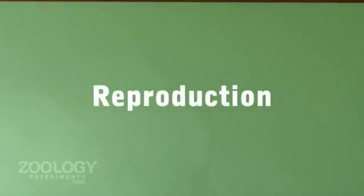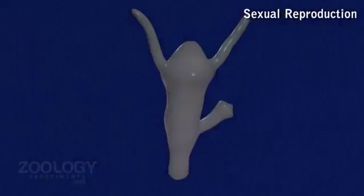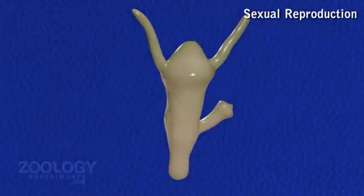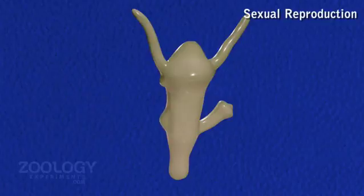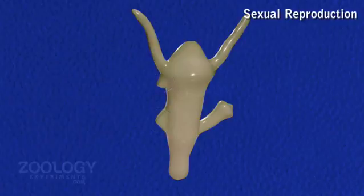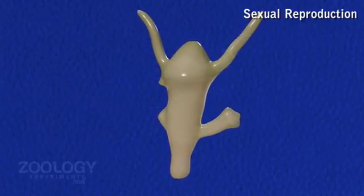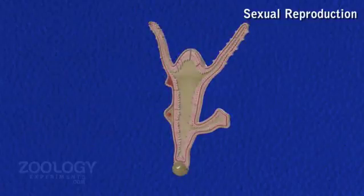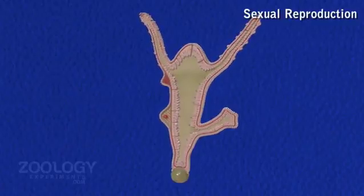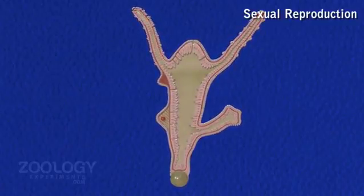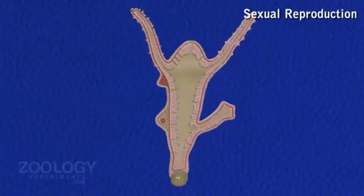Reproduction. Sexual reproduction: Hydra reproduces sexually by the fusion of gametes. Generally, in autumn, gonads develop temporarily from interstitial cells of the epidermis, which accumulate to form bulges in the body wall. Hydra is a hermaphrodite species, even though self-fertilization is avoided because it is protandrous — meaning spermatozoa and ova mature at different times.